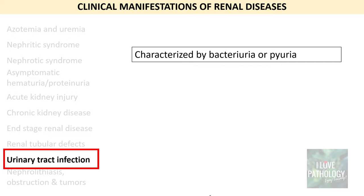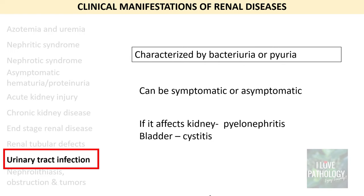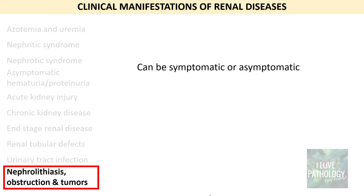Urinary tract infection — UTI — is characterized by either bacteriuria (presence of bacteria in urine) or pyuria (presence of white blood cells in urine). They can be symptomatic or asymptomatic. If it affects the kidney we call it pyelonephritis; if it affects the bladder we call it cystitis. Symptomatic presentations include fever, burning micturition, and so on.